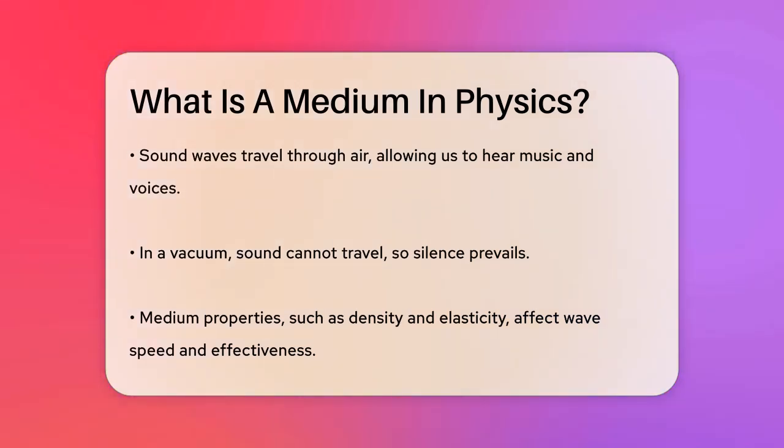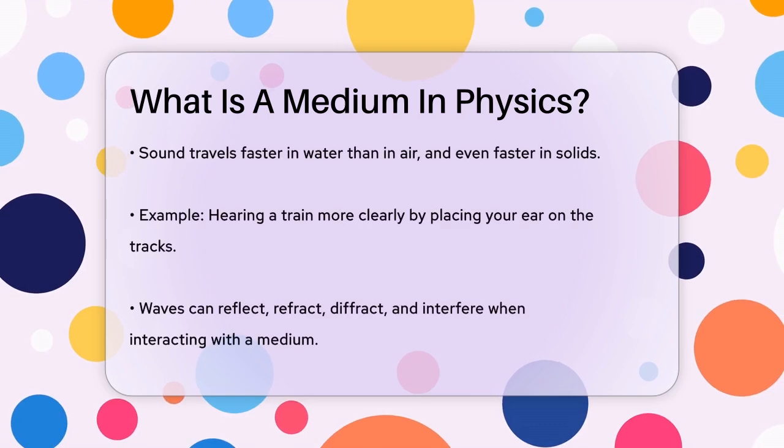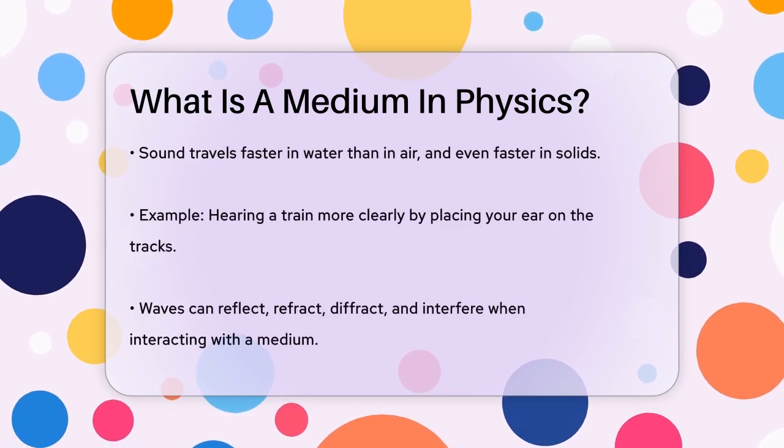The properties of the medium, such as its density and elasticity, play a big role in how fast and effectively a wave travels through it. For instance, sound travels faster in water than in air, and even faster in solids.